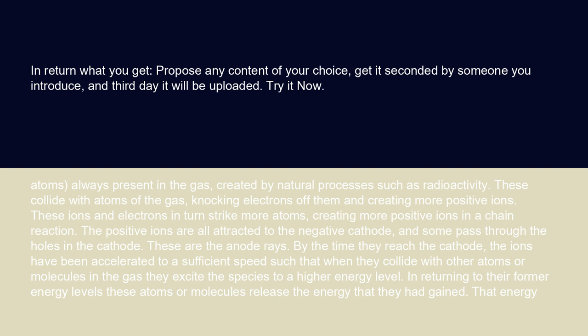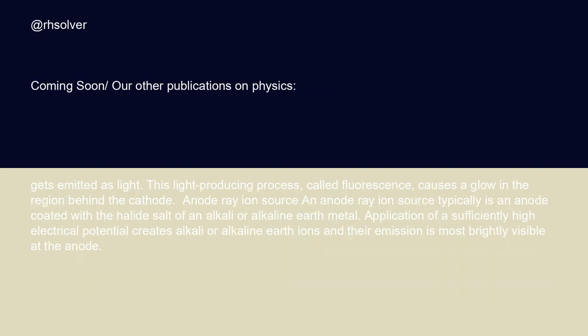By the time they reach the cathode, the ions have been accelerated to a sufficient speed such that when they collide with other atoms or molecules in the gas, they excite the species to a higher energy level. In returning to their former energy levels, these atoms or molecules release the energy that they had gained — that energy gets emitted as light. This light-producing process, called fluorescence, causes a glow in the region behind the cathode.